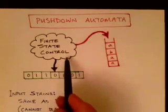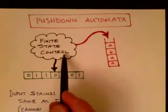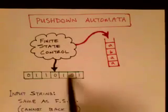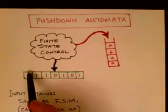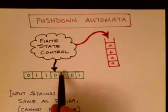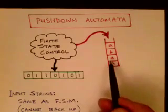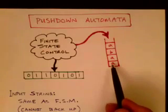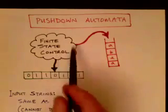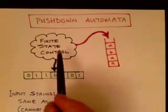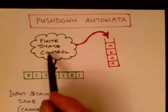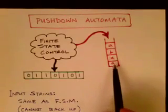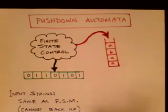This looks a lot like our finite state machine. You've got a finite state control with multiple states and transitions between the states, and you've got an input string shown here at the bottom. This machine will scan the input string character to character, never backing up. The real difference is that the pushdown automaton has a stack, and this stack can be pushed and popped during execution. So in addition to going from state to state, as we read each character, the machine can also push and pop characters on the stack.